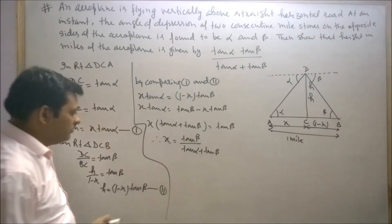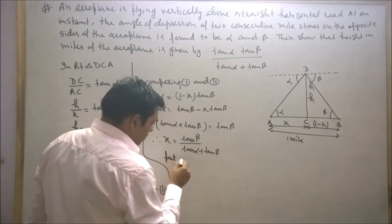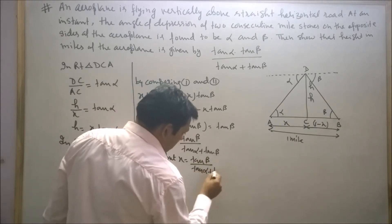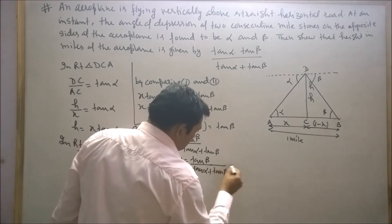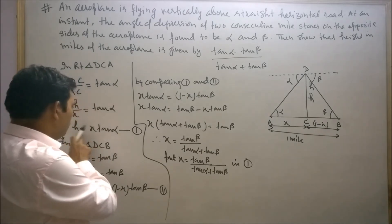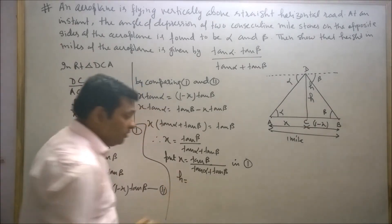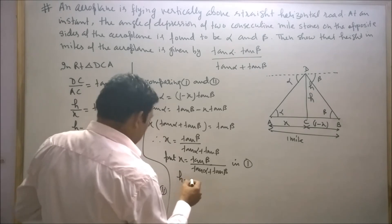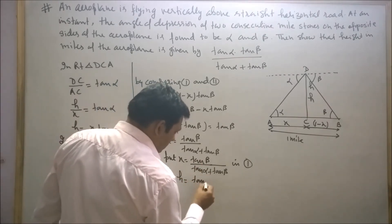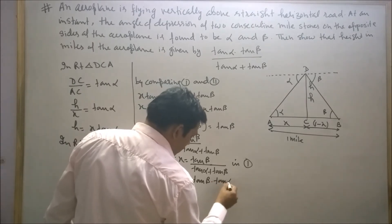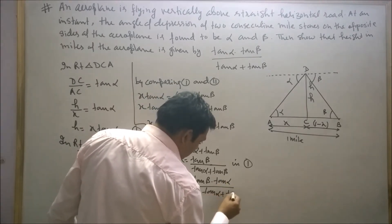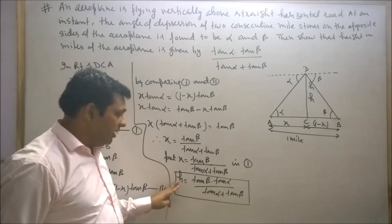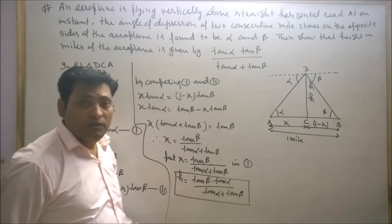Now put this value of X equal to tan beta upon tan alpha plus tan beta into equation one. Therefore H equals X times tan alpha, which gives H equals tan alpha into tan beta upon tan alpha plus tan beta. So the height of the aeroplane is tan alpha into tan beta upon tan alpha plus tan beta.